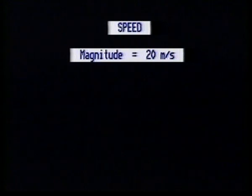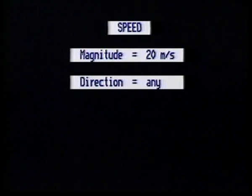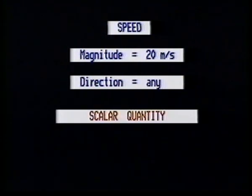Speed is distance divided by time. This can take place in any direction and it's called a scalar quantity.